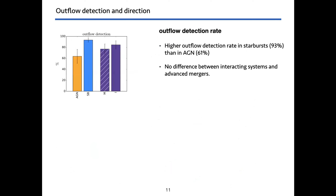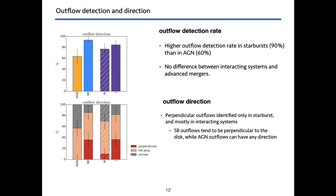In our sample we look at the outflow detection rate. Overall we have about 90% of the nuclei where we detect an outflow. We look at this detection rate divided in different categories. What we see is that mergers and interacting systems shown in violet do not show a difference in detection rate depending on the merger stage. But if we divide the sample into AGN and starburst, we detect more outflows in starburst. With respect to outflow direction, perpendicular outflows are shown in red and non-perpendicular ones in salmon. We found that perpendicular outflows are mostly found in starburst and interacting systems. A possible explanation is that outflows powered by starbursts are pushed perpendicular to the disk as they escape through the path of least resistance.